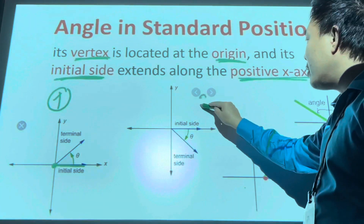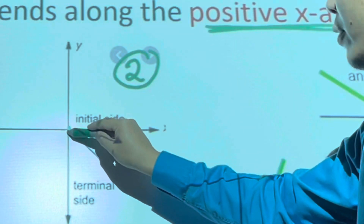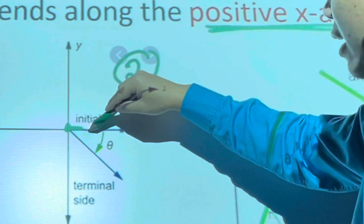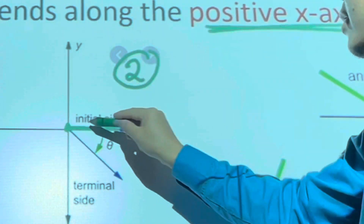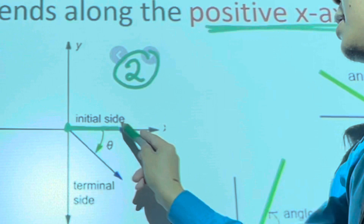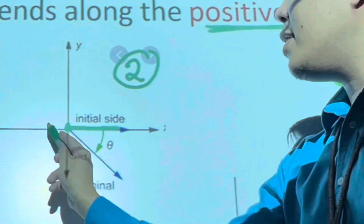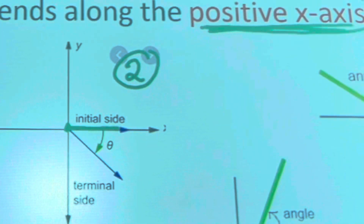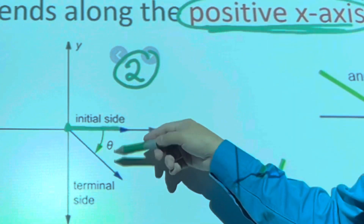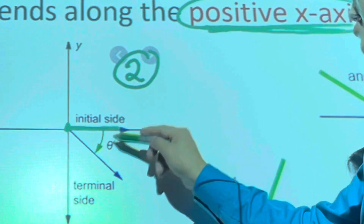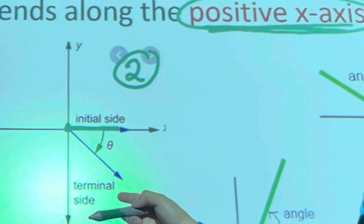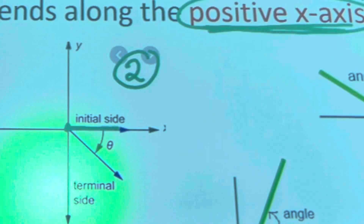In the second figure, you can see the vertex is at the point of origin and the initial side is found on the positive side of the x-axis. Remember that the criteria for standard position requires the positive x-axis only. This angle meets the criteria, so the second angle is drawn in standard position.